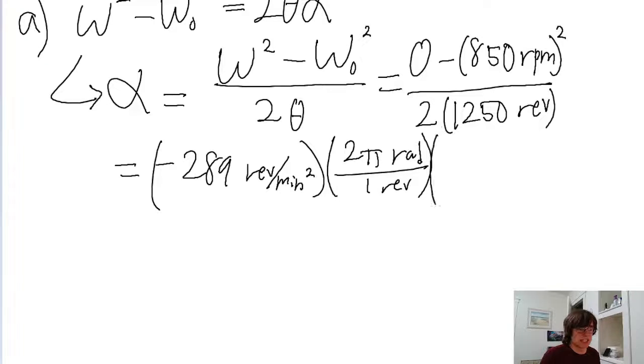And then converting from minutes into seconds by multiplying by 1 minute per 60 seconds. And then this has to be squared because it's squared minutes.